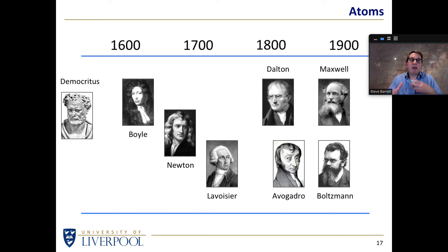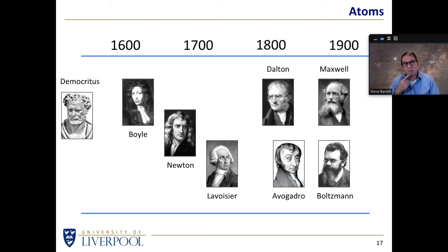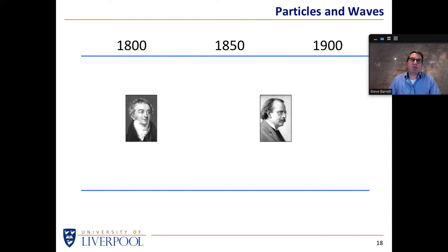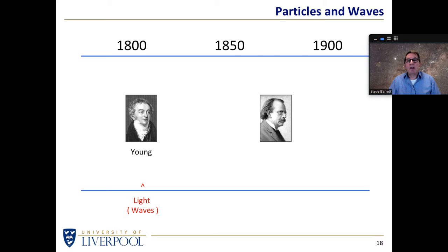Towards the end of this timeline it was mainly chemistry that was dictating the idea of building blocks: if we take this many grams of this material and react it with this many grams of that material we get this many grams of a different material — from that you can start to get an idea of what the building blocks must be. Looking at 1800 to 1900, there are two pivotal experiments. Back in the early 1800s, Young passed light through slits and noticed interference, indicating that light is a wave.